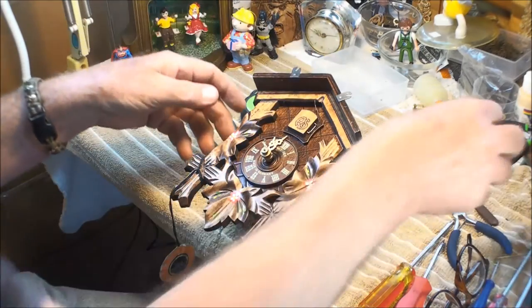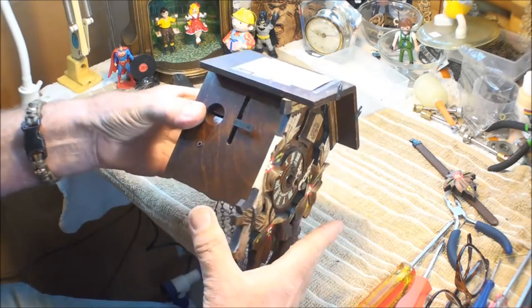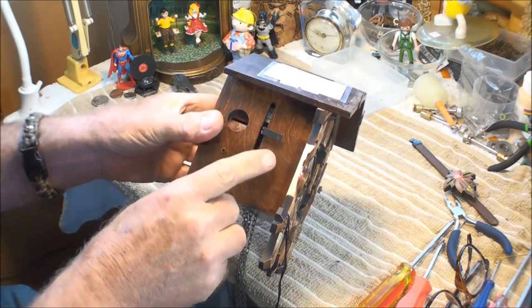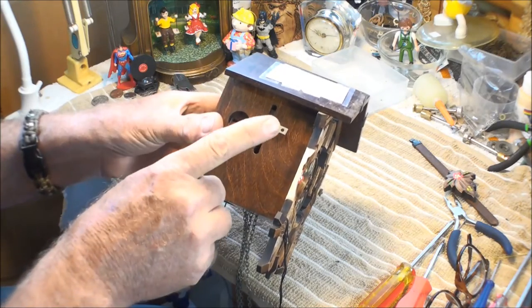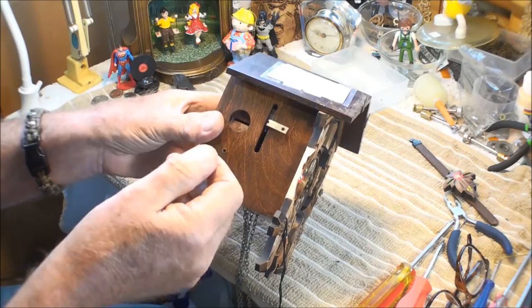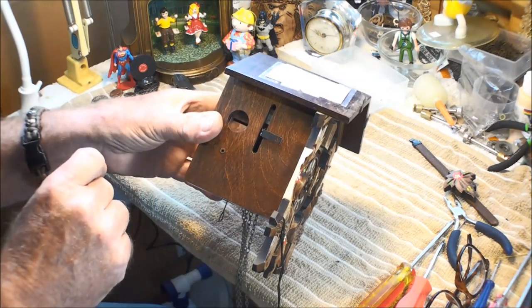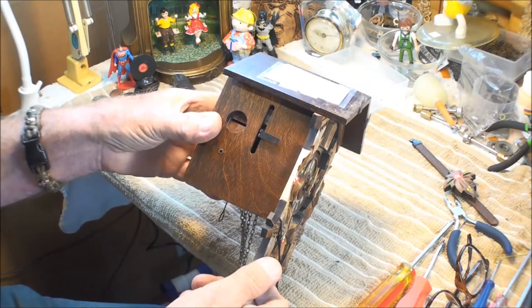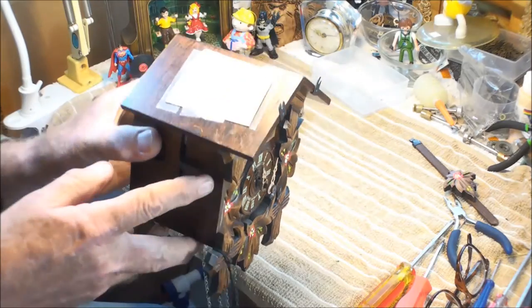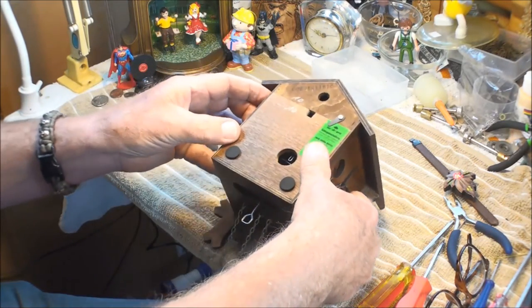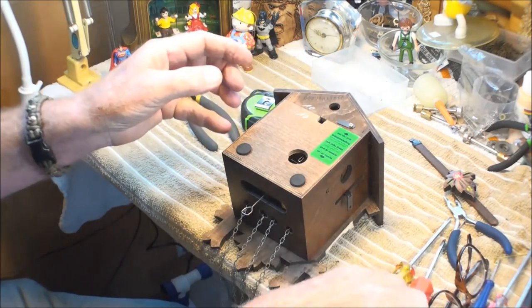Here on the side, this is a lever that you push up and it silences the cuckoo at night in case it bothers you. You push it down and now the cuckoo bird or the cuckoo noise will work.